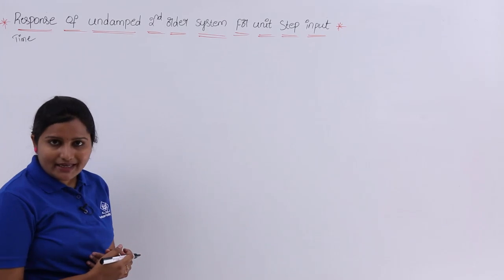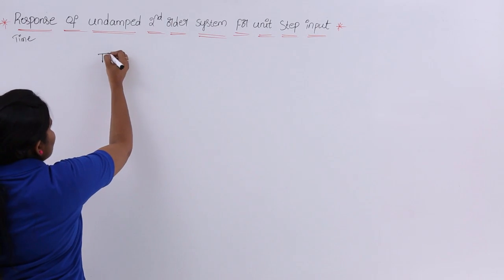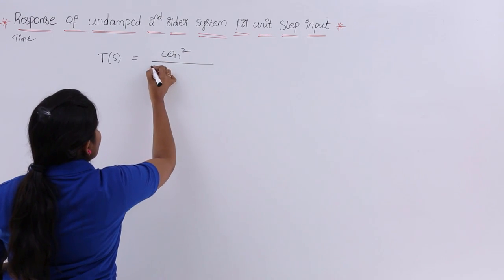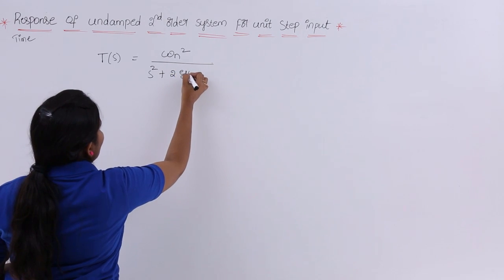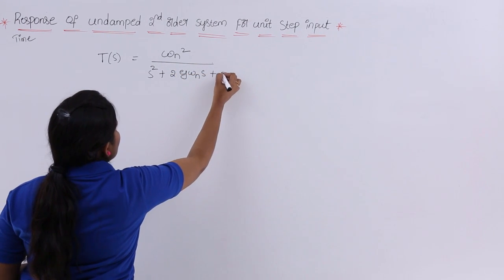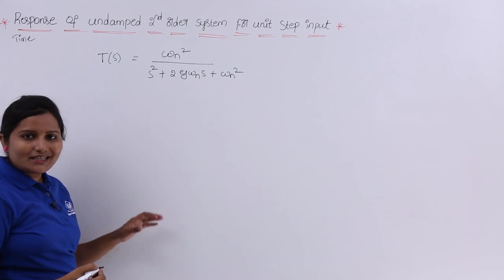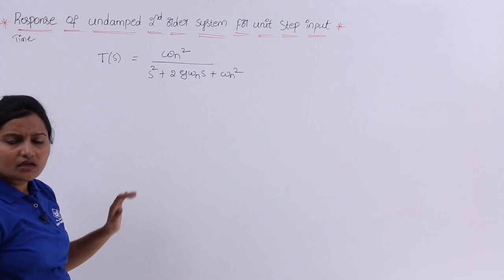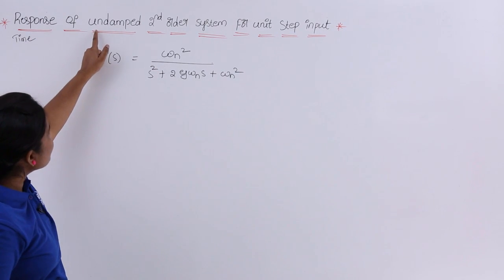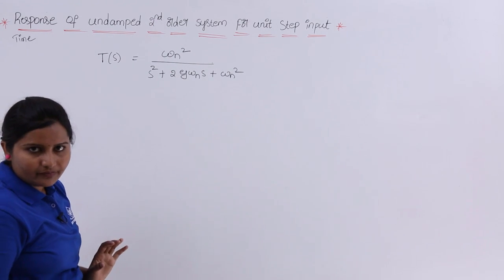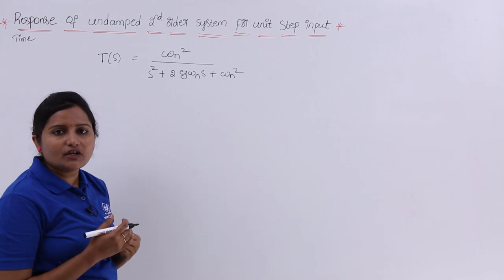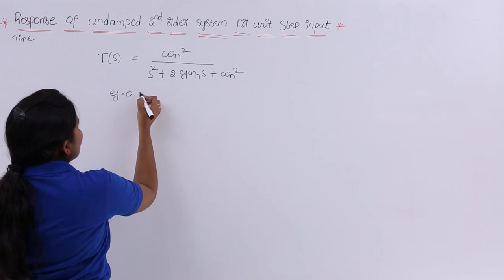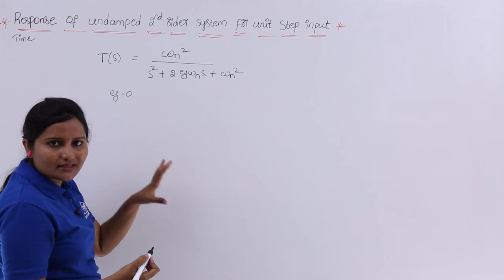When we say second order system, the basic transfer function is equal to ωn² divided by s² plus 2ζωn·s plus ωn². This is the general transfer function of the second order system. Now, for the undamped second order system, we recall from the last class that an undamped system is one where ζ is equal to 0.